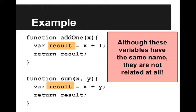There is a key point here, and it is that although these variables have the same name, they are not related at all. We are creating a result variable in the addOne function, we are creating a result variable in the sum function, but they are totally different. Those variables only exist inside that function and have totally different meanings.